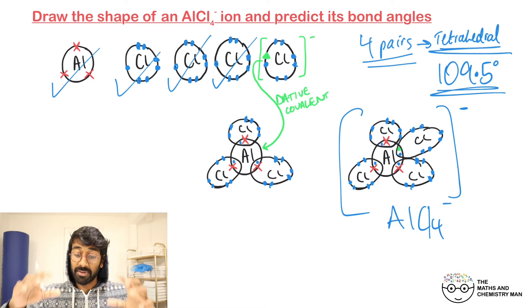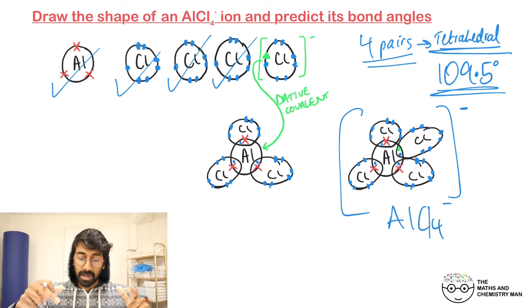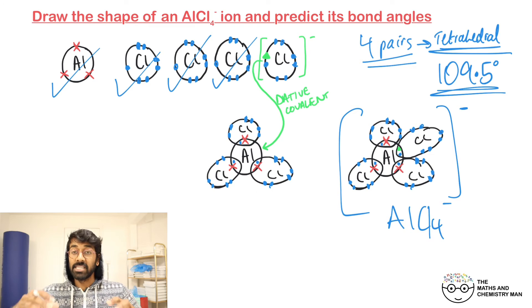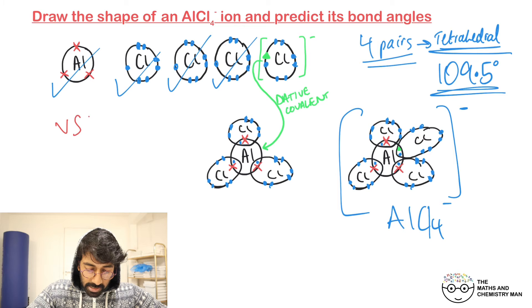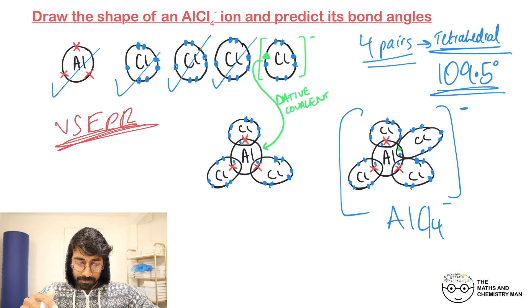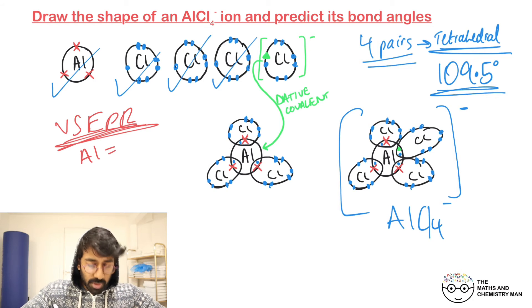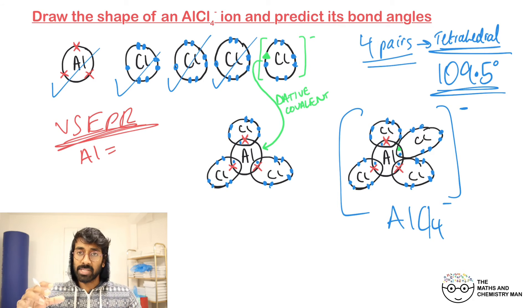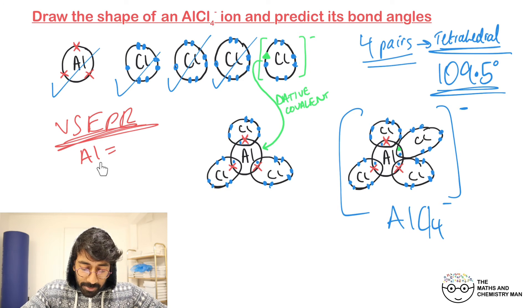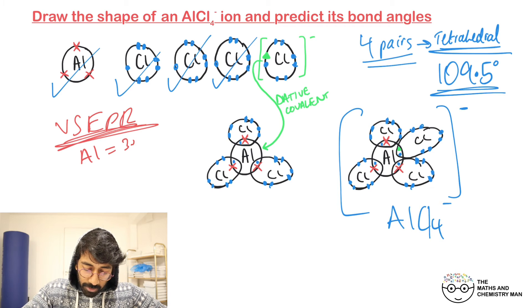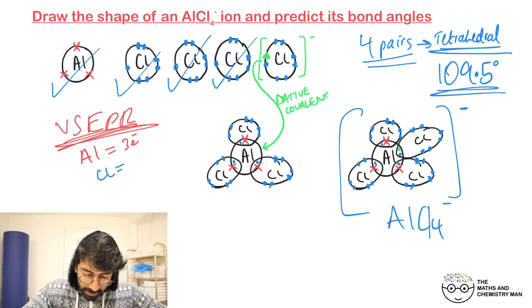How did we get it? We got it by drawing out our dot and cross diagram and seeing how the chlorines are going to fit around the aluminium. The other method you could do is called the VSEPR theory. This is really simple. I'll release a video on how to actually use this method properly, but here's a quick look through it.